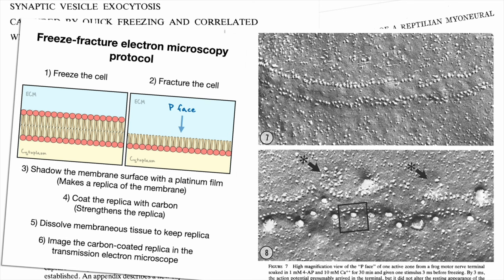After cleavage, the surface is shadowed with a platinum film which produces a replica of the surface. The replica is then coated with carbon to increase its stability.